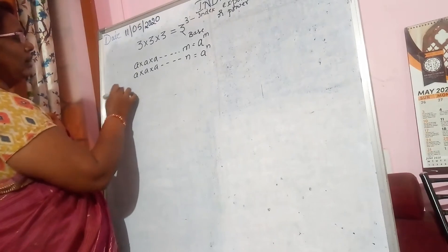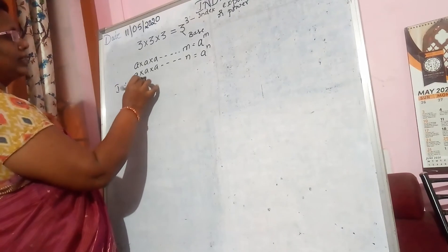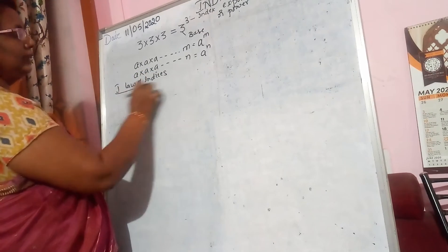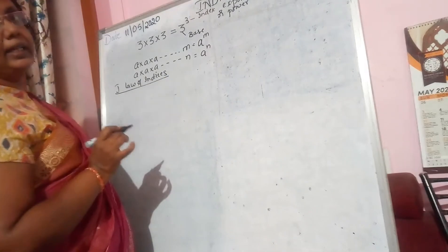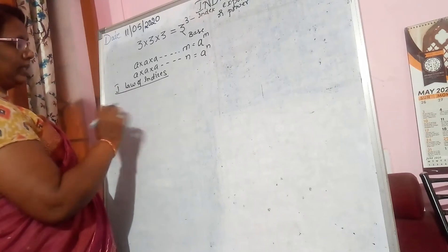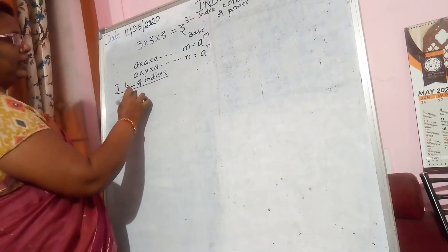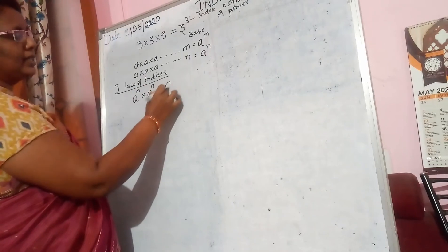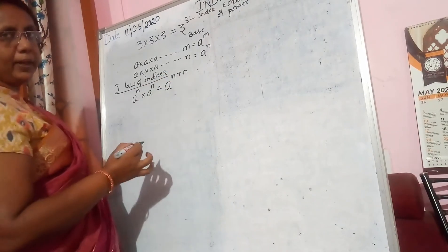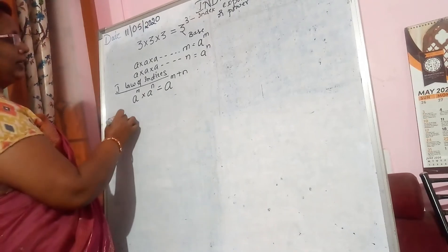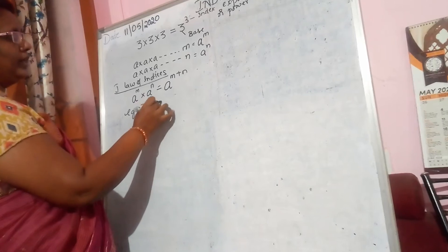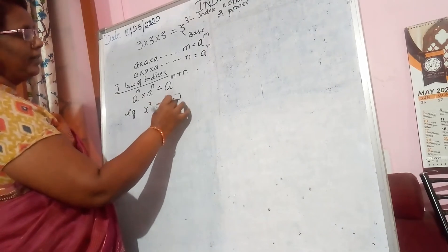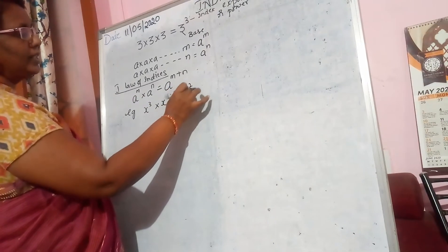Now let us see the first law of indices. We have explained this in class 6 when we started multiplication in algebra. When you take a product — a raised to the power of m multiplied by a raised to the power of n — the powers get added: a raised to the power of m plus n. For example, x cubed into x squared: the powers get added, 3 plus 2, which equals x to the power of 5.